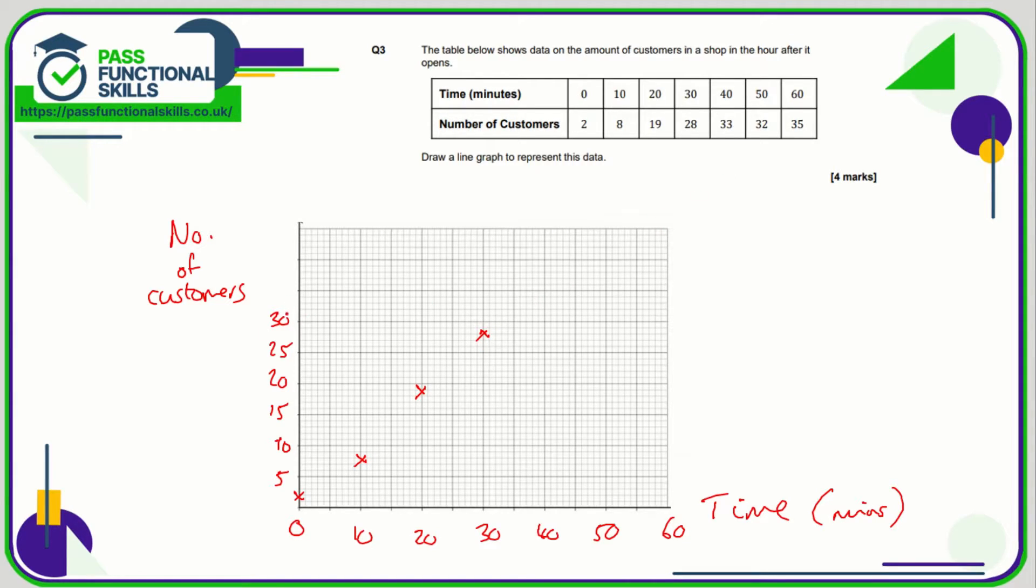It would have helped if I'd gone up to 35 and then 40, that makes more sense. So 40 is 33, so 30, 31, 32, 33. 50 is 32, so 30, 31, 32. And 60 is 35.